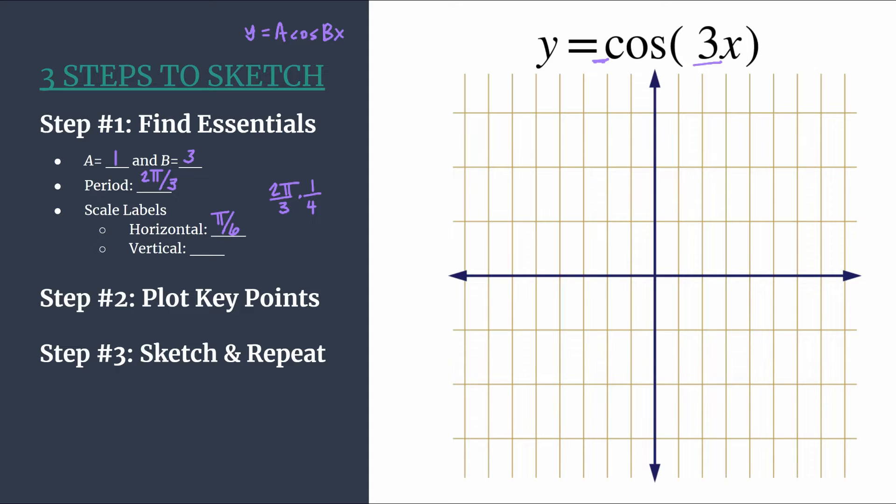We will count by π over 6 when labeling our horizontal tick marks. The reason we divide by 4 is because we will in the next step have 4 key points that we're plotting, and so this will equally space our points and ensure that they align with our tick marks. That just makes for a nice clean graph and also makes things easier on us.